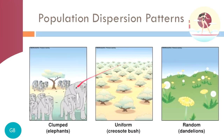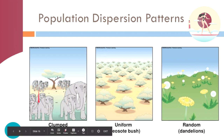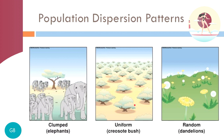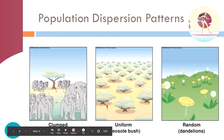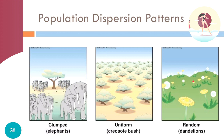Elephants show clumped dispersion by herding together. The creosote bush is an example of uniform dispersion — bushes are equally spaced so their roots can access equal amounts of nutrients and water from the soil. Dandelions show random dispersion, wherever the wind carries their seeds. Spore-forming fungi are also dispersed randomly.